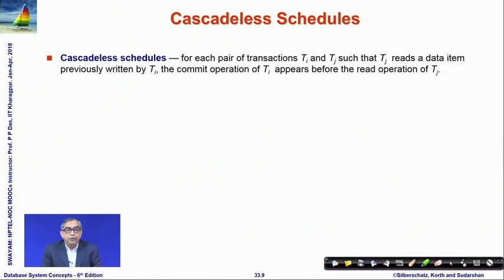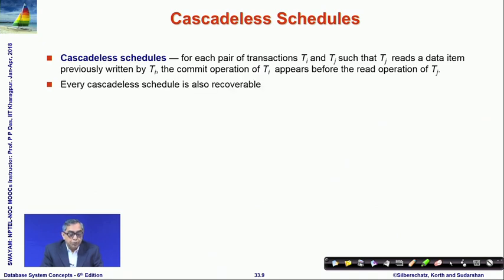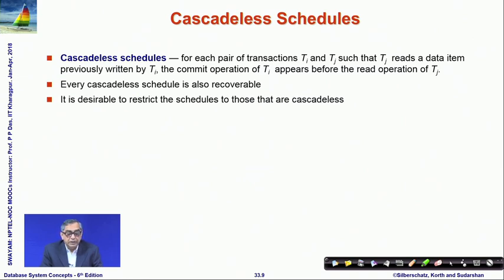We would prefer schedules where cascading rollback is not required. The condition to achieve this is: if Tj reads a data item previously written by Ti, the commit operation of Ti must happen before the read operation of Tj — meaning Tj should only read committed values, not intermediate temporary values. Every cascadeless schedule is also recoverable. It is desirable to restrict schedules to cascadeless ones to minimize rollback work.